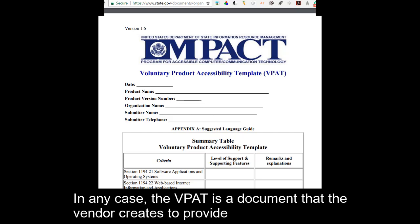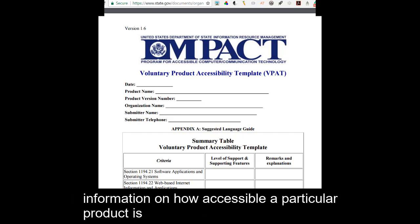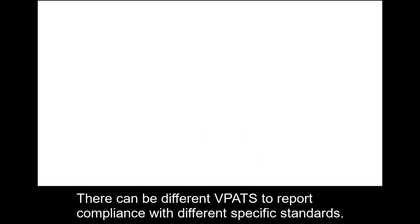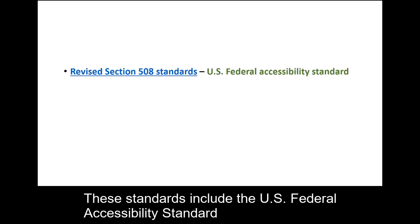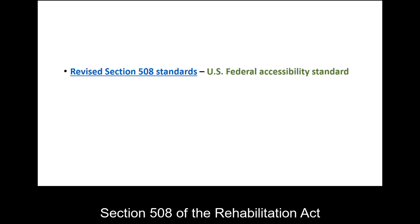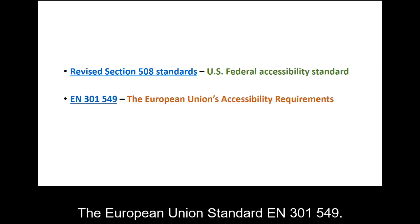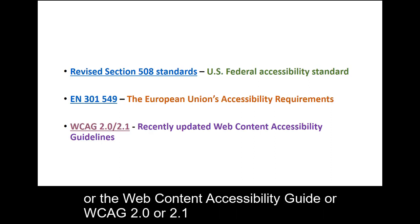The VPAT is a document that a vendor creates to provide information on how accessible a particular product is. There can be different VPATs to report compliance with different specific standards. These standards include the U.S. Federal Accessibility Standard, Section 508 of the Rehabilitation Act, the European Union Standard EN 301-549, or the Web Content Accessibility Guidelines, WCAG 2.0 or 2.1.